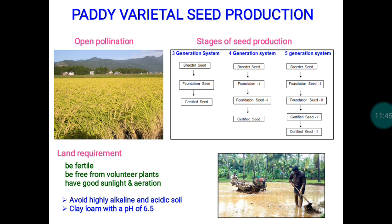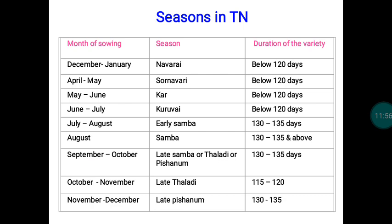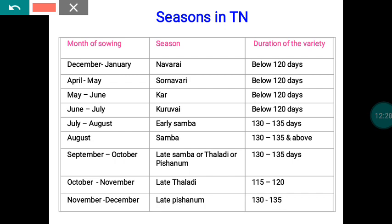Land selection comes under agronomic principles, and season selection is also a very important deciding factor. In Tamil Nadu, many seasons are available. For example, the Navari season corresponds to December–January, during which we can cultivate rice varieties with a duration of less than 120 days.